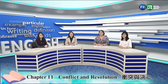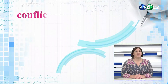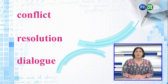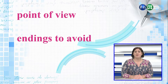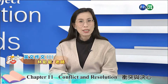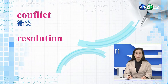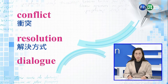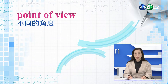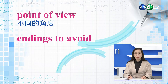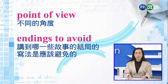In this unit, we'll be pushing the story forward with a conflict and resolution dialogue, point of view, and endings to avoid. 在本章节，我们要讲的重点是conflict冲突，还有resolution解决方式，以及如何写dialogue对话，用各种point of view不同角度来写作，最后还要讲到endings to avoid，就是应该避免的故事结局写法。